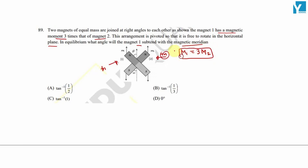The arrangement is pivoted from the center and it is free to rotate in the horizontal plane. The question asks: in equilibrium, what angle will magnet one subtend with the magnetic meridian? The arrangement is pivoted from here and this is the magnetic meridian.